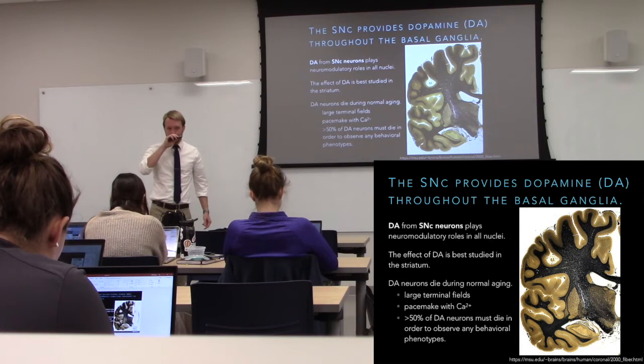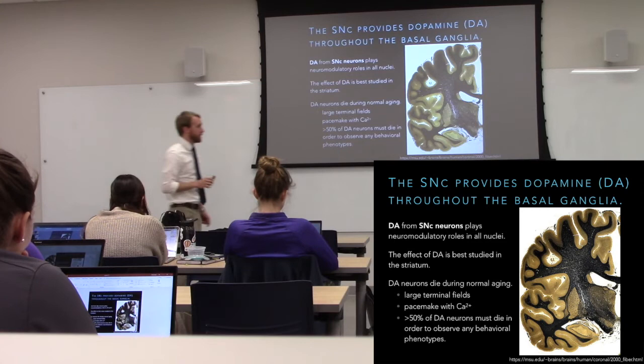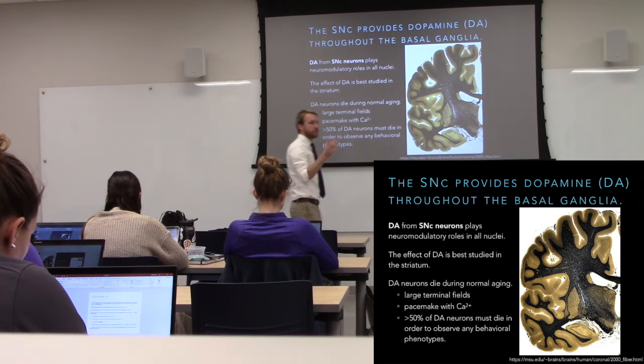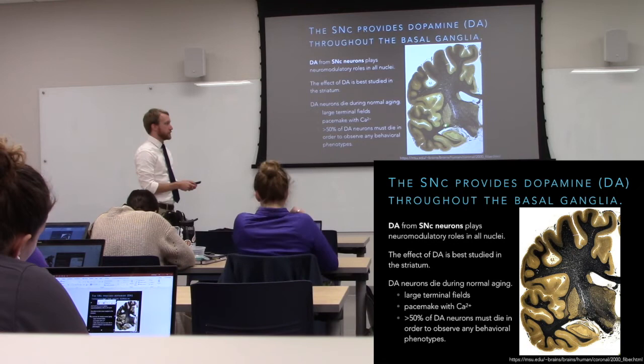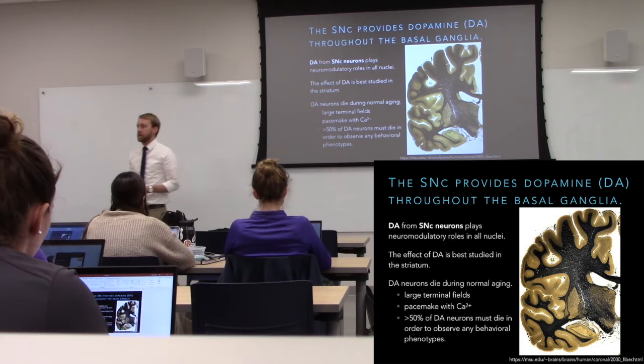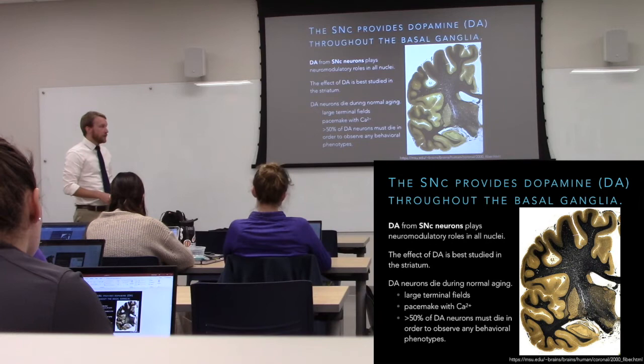Here's our globus pallidus external segment — you can see it has GABAergic projections to the output nuclei as well as to both input nuclei, the striatum and the STN. This allows it to widely affect the activity of the basal ganglia. Last set of neurons: these are the dopaminergic neurons in the substantia nigra pars compacta.